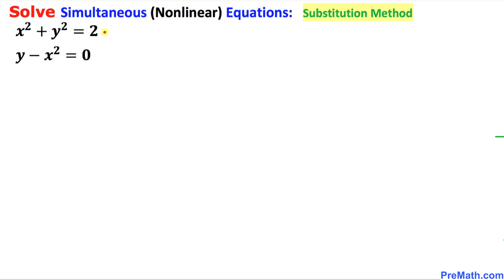Let's look at these both equations and we know that the first equation x squared plus y squared equal to 2 represents a circle while the second equation y minus x squared equal to 0 is a parabola.